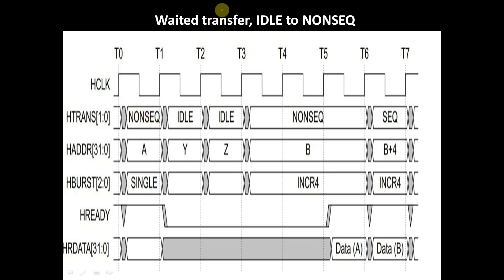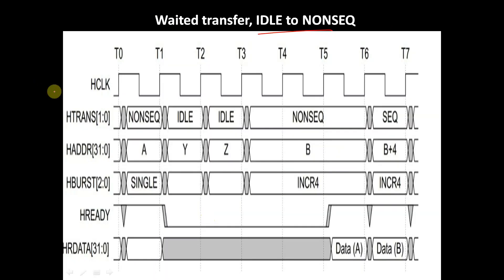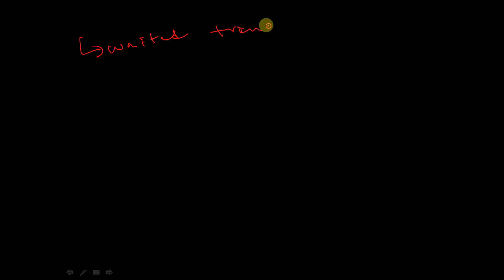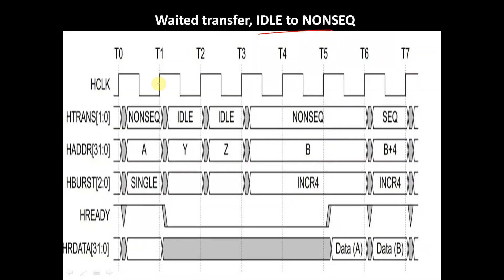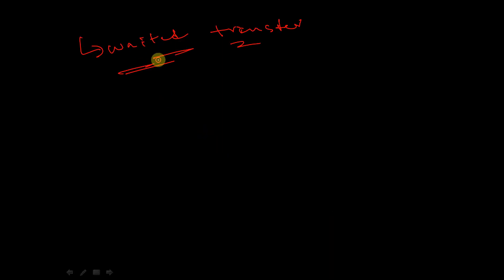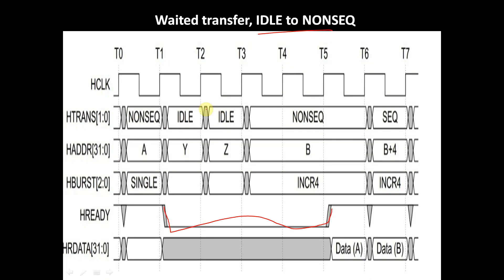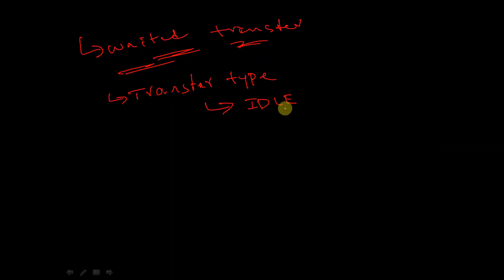Let us consider this example: wait state transfer from idle to non-sequential. When the slave is asking for a wait state — that is, the slave is not ready for any transfer — the master includes wait states in between the transfer. We can see HREADY is low here, so a wait state will be included. This is the first case: when the transfer type is idle and the slave is asking for wait states, the master can change the transfer type from idle to non-sequential even during the wait states.